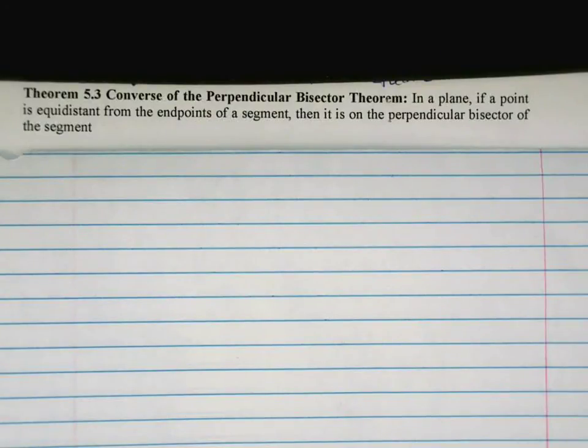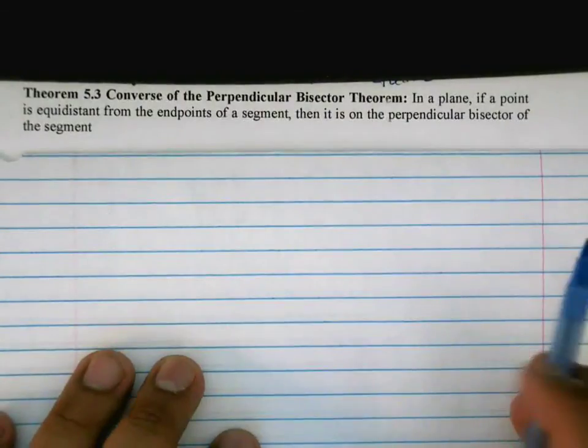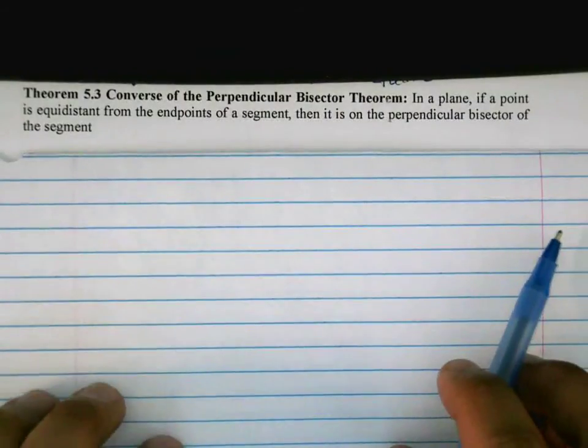Again, some of these theorems, as they get more complicated, just to be able to articulate them and draw a picture that represents them is I think half of the battle. So let's look at what this theorem says. In a plane, if a point is equidistant from the endpoints of a segment, then it is on the perpendicular bisector of the segment.